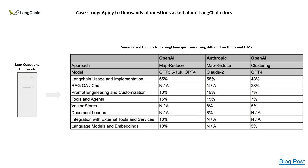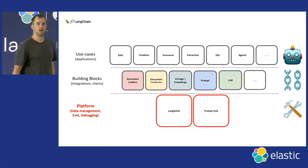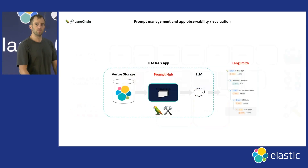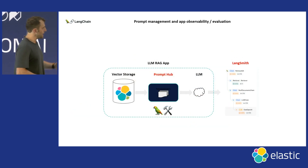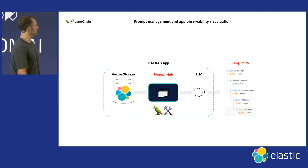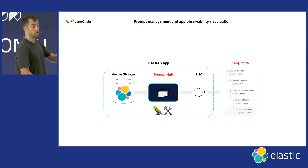We applied these approaches to all user questions asked to LangChain, and the different approaches were consistent — a good sanity check. Moving to platforms: even a RAG app using Elastic has two big pieces you can use with LangChain — the Prompt Hub, which is a way to manage and store prompts, and LangSmith.